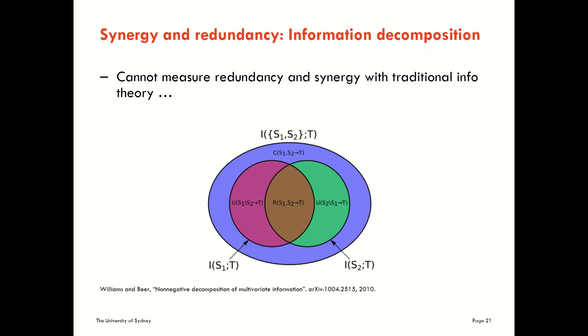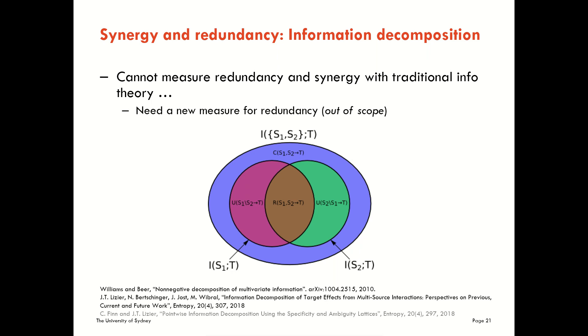So as I say, we only have these three measures from traditional information theory about information, but there may be four terms that we want to measure, so we have a fundamental algebraic problem. So there's been a lot of work going on in contemporary information theory to try and get a new measure for redundancy that can lock in all these pieces in the diagram.